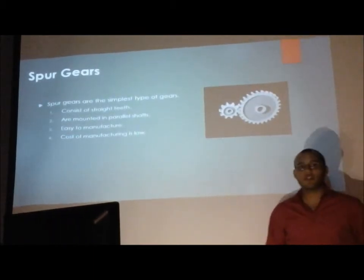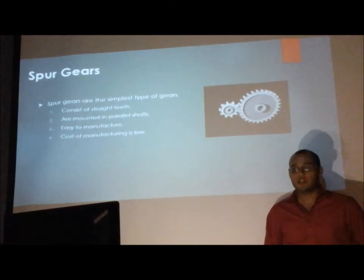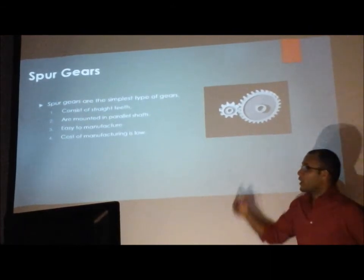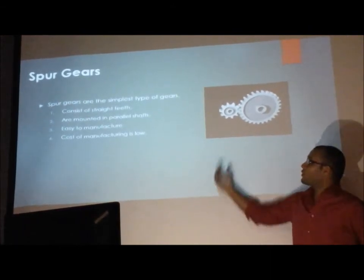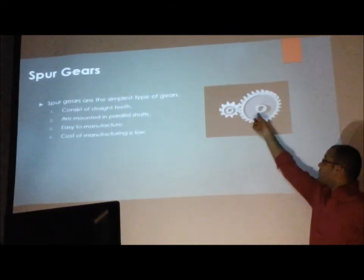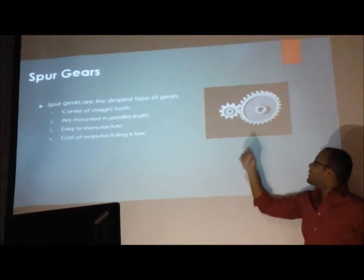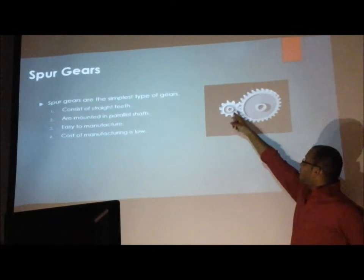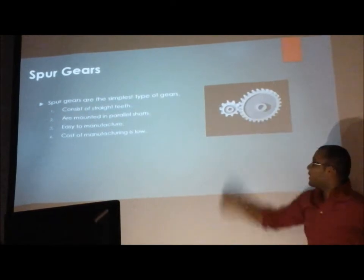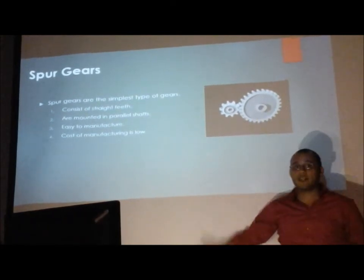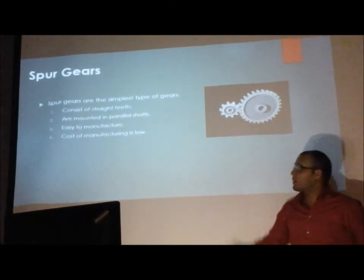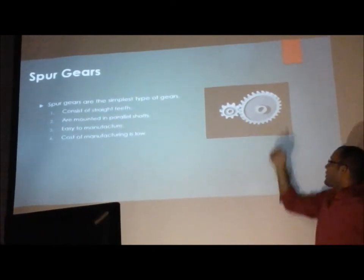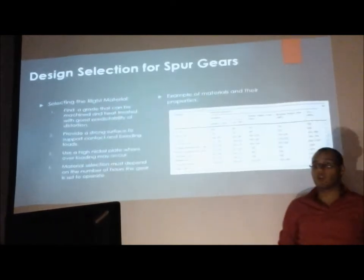Spur gears are the simplest gears. They consist of straight teeth and they are mounted on parallel shafts. They are easy to manufacture and the cost of manufacturing is relatively low.